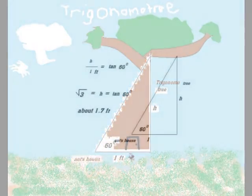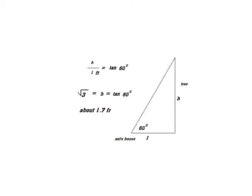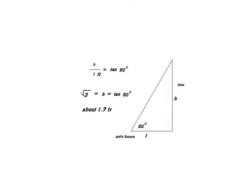She noted that the ratio of the unknown height to the distance from house to tree is called the tangent of the angle of elevation.